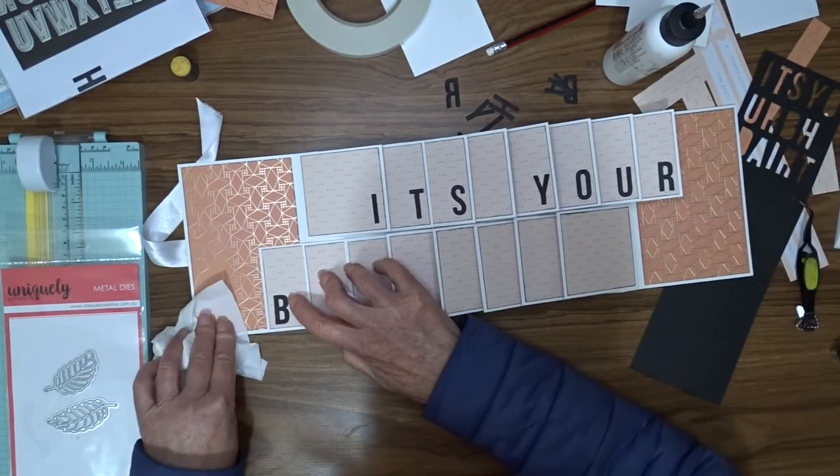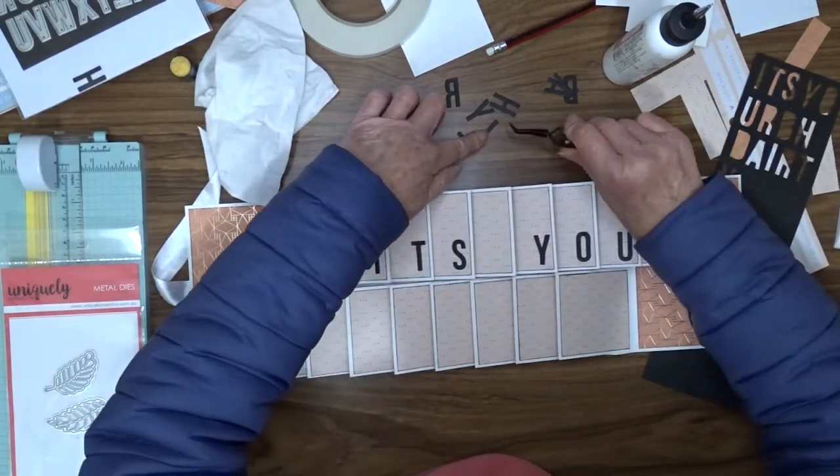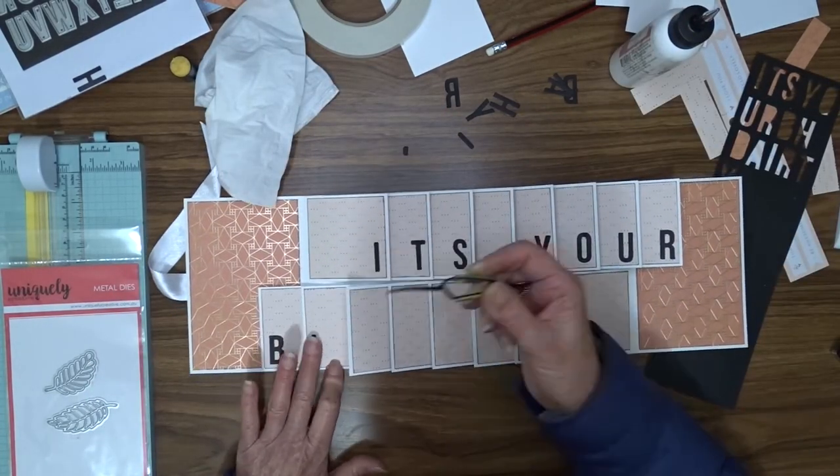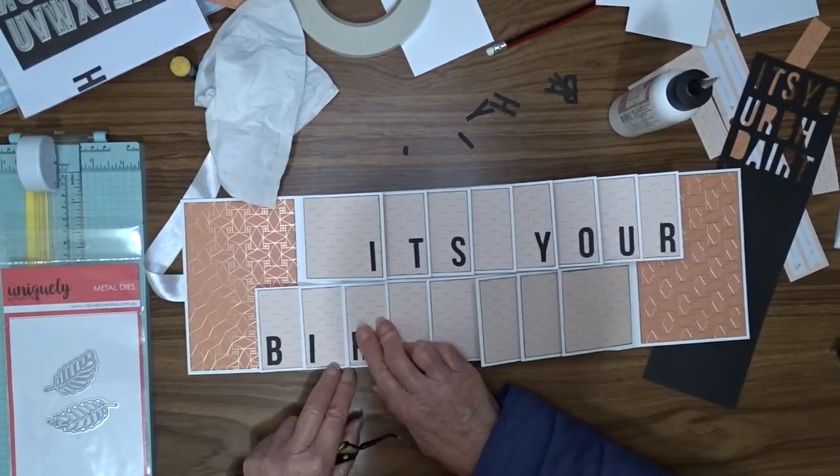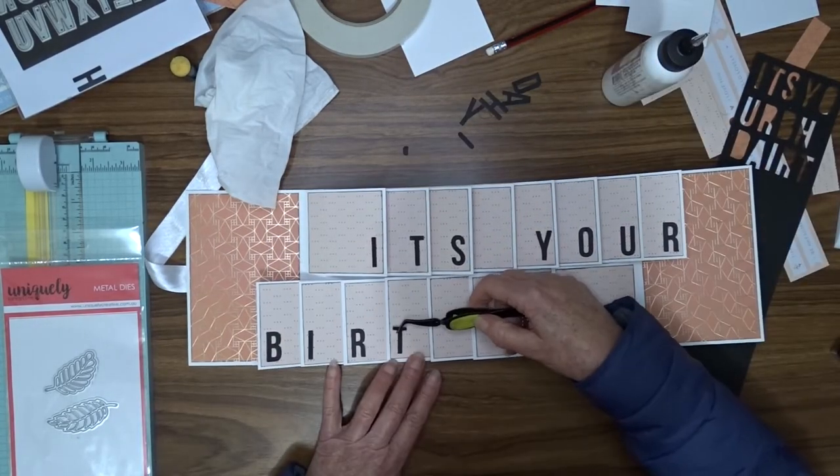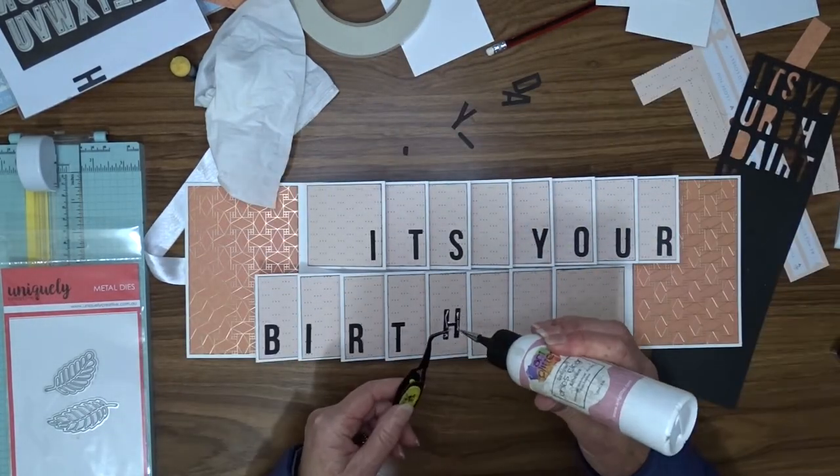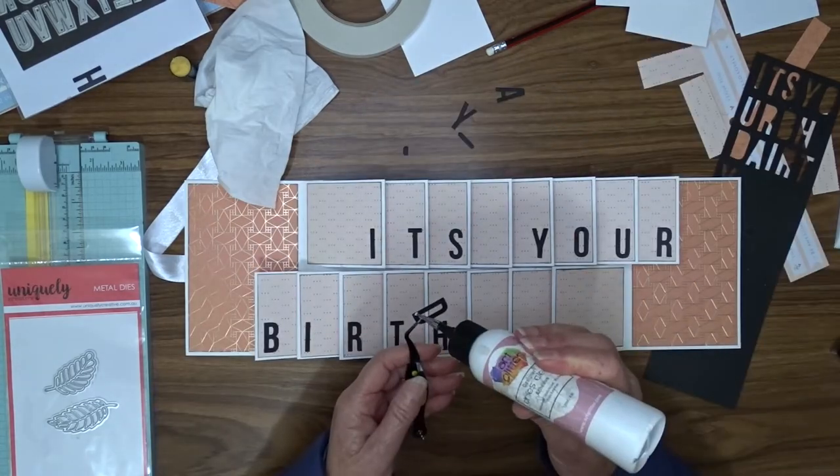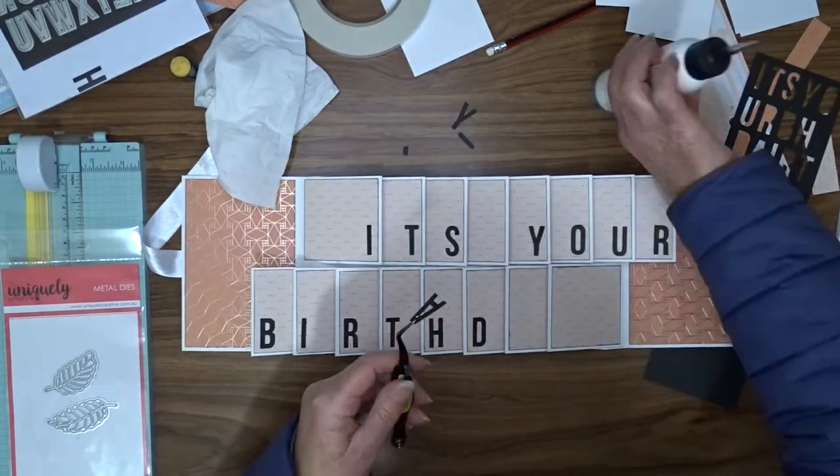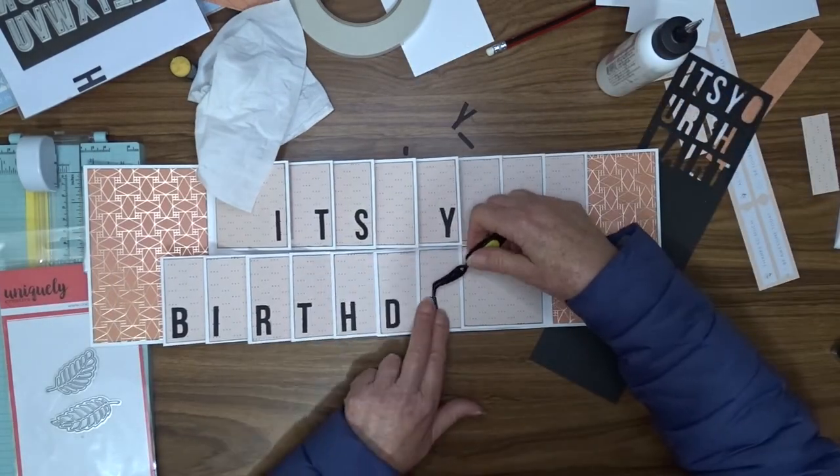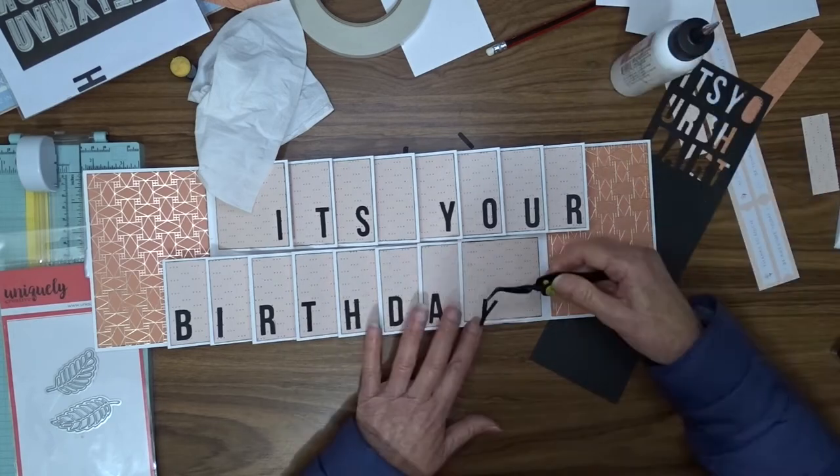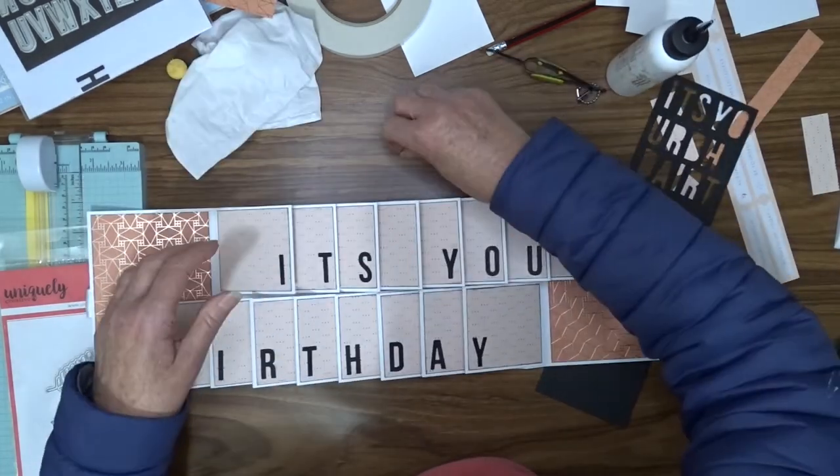I am going to use my tweezers and my liquid glue to attach these to the bottom right hand section of each one of those flaps along the top. There are eight flaps along each level, so the eight along the bottom are big enough to have birthday, so you can spread them out however suits you.